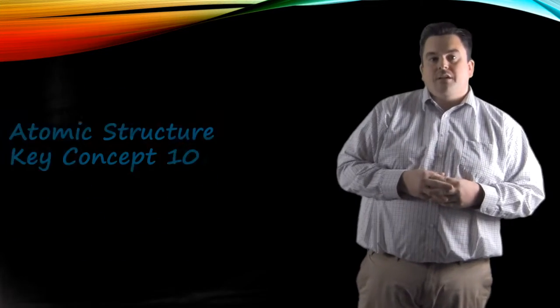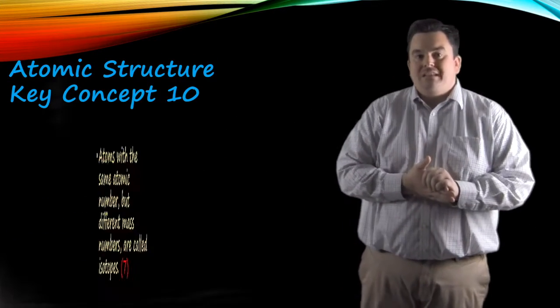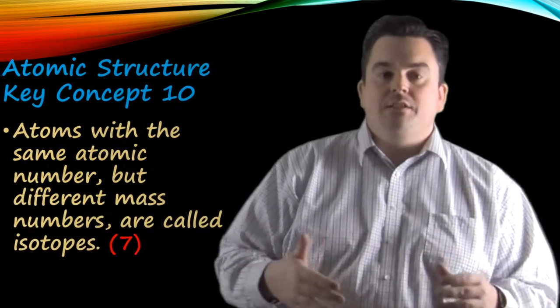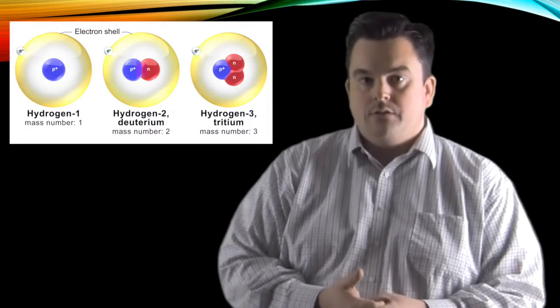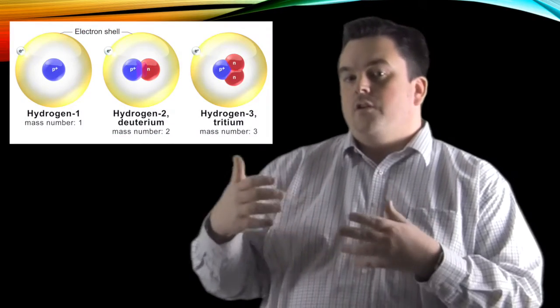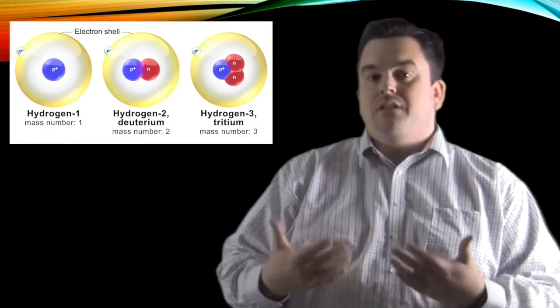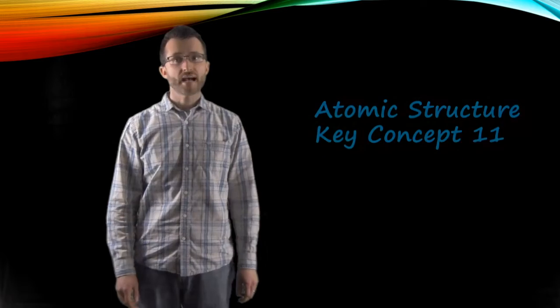Atomic structure, key concept ten. Atoms with the same atomic number but different mass numbers are called isotopes. Now isotopes are atoms that have the same number of protons, but they have different neutrons. Now that different number of neutrons gives rise to the fact that they have different masses. Now isotopes, the notation can be shown in two different ways. One way would be to have the element symbol and in the upper left would be the mass number. Another way would be to have the element symbol followed by a dash and the mass number.